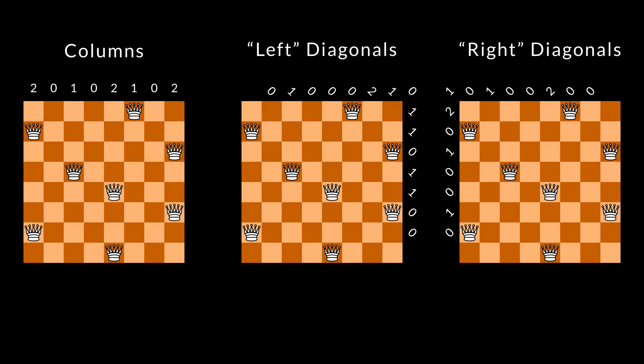So, we do exactly like before, but instead of checking each square along the column and the left and right diagonal, we can simply look up how many queens there are in constant time.